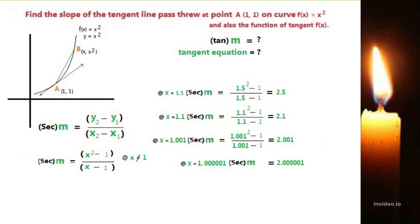In the x coordinate, we have x = 1.5, giving slope 2.5. We have x = 1.1, giving slope 2.11. When x = 1.001, slope is approximately 2.001. When x = 1.000001, slope is approximately 2.000001. Note the slope approaches 2.000006 — you can verify this.